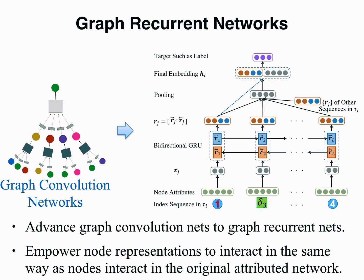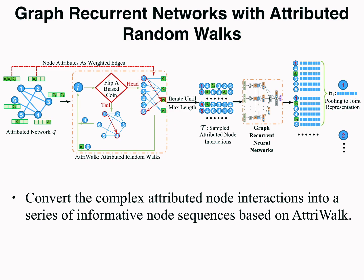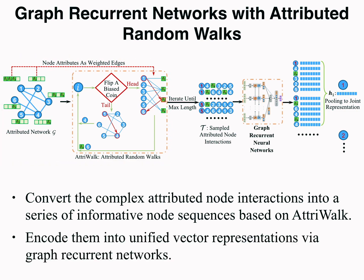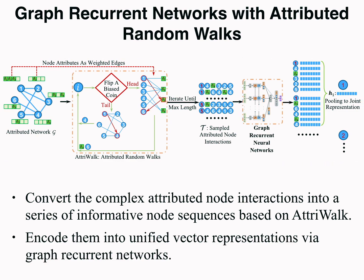GRN empowers node representations to interact in the same way as nodes interact in the original attributed networks. In such a way, we convert the complex attributed node interactions into a series of informative node sequences based on Atriwalk, and encode them into a unified vector representation using graph recurrent networks.